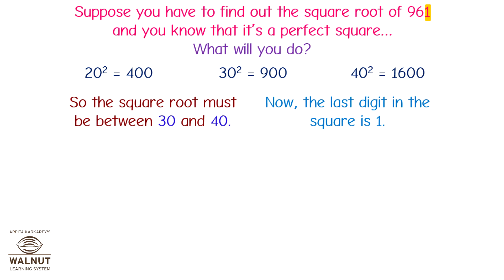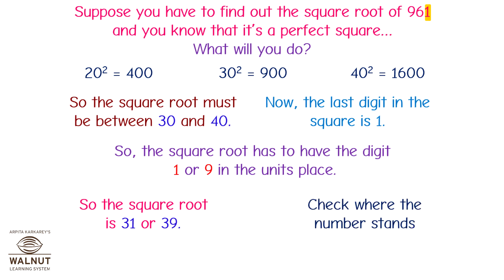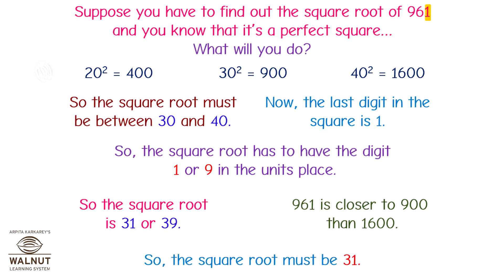Now the last digit in the square is 1, so the square root has to have the digit 1 or 9 in the units place. So the square root is 31 or 39. Check where the number stands — 961 is closer to 900 than 1600, so the square root must be 31.